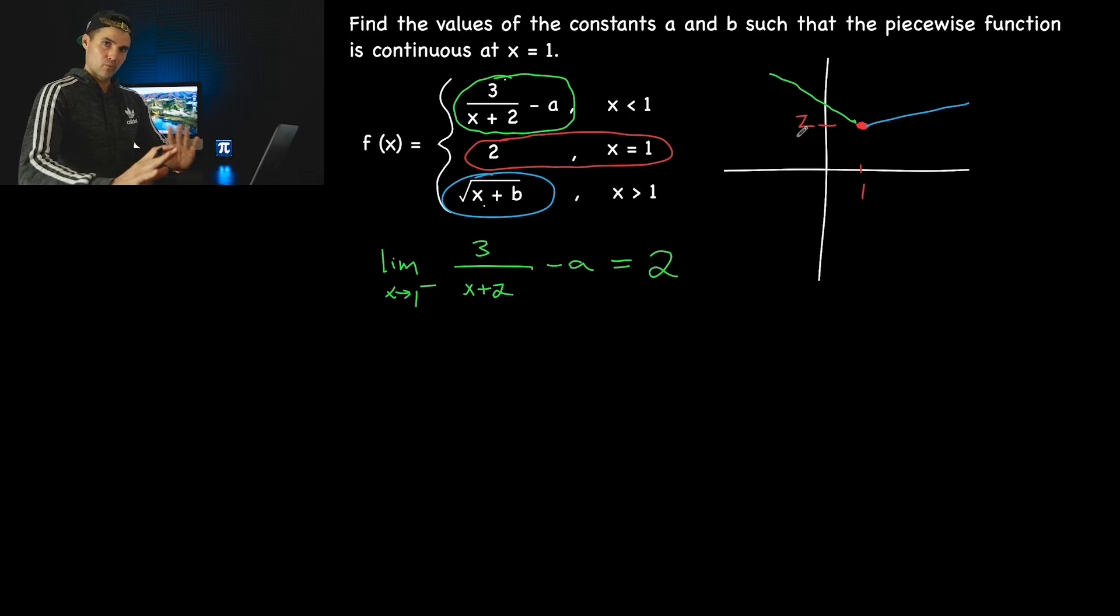But no matter what shape it takes, if the entire piecewise function is going to be continuous at x equals 1, then the limit of this function as we approach 1 from the right side